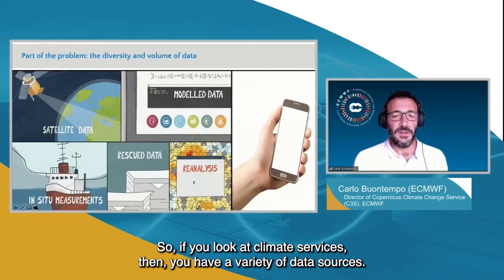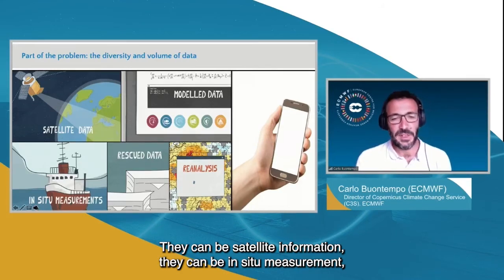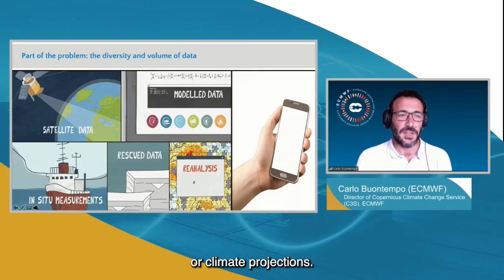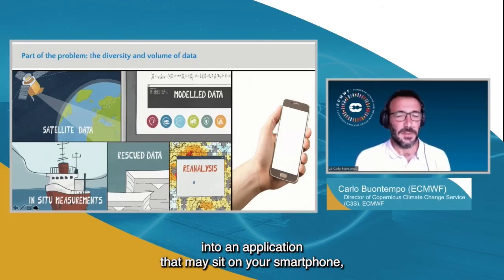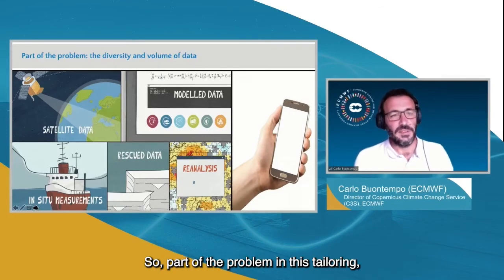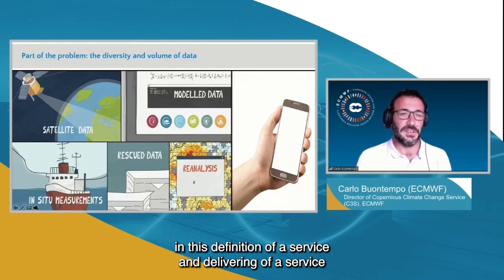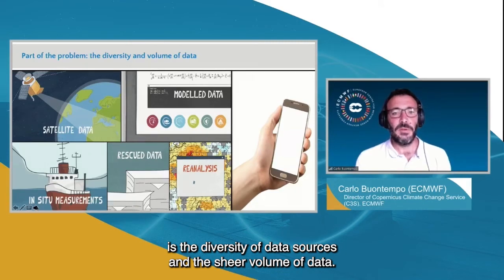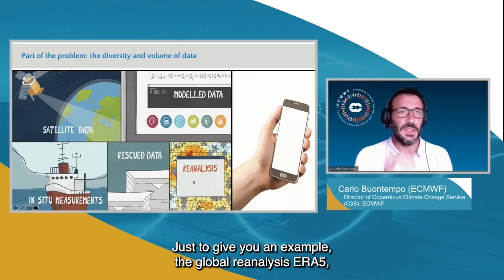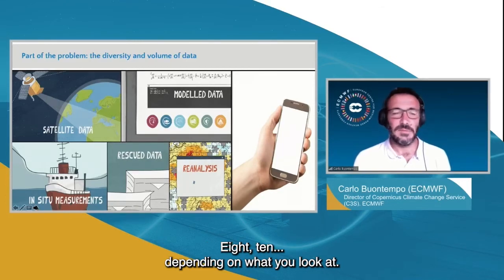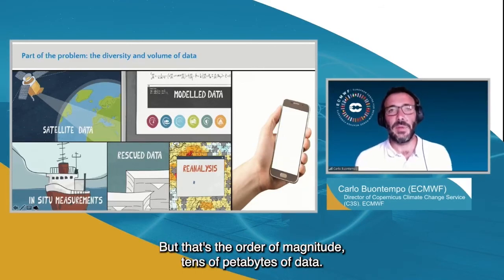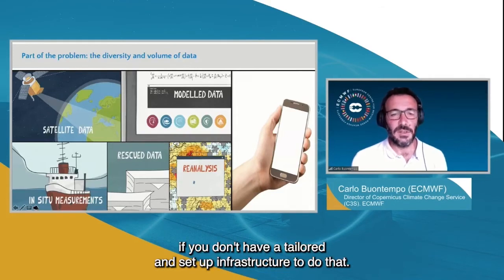If you look at climate services, you have a variety of data sources: satellite information, in-situ measurements, reanalysis, seasonal prediction, or climate projections. Before transforming all this data into an application that may sit on your smartphone, you need to process a huge amount of data. Part of the problem in tailoring and delivering a service is the diversity of data sources and the sheer volume of data. Just to give an example, the global reanalysis ERA5 dataset is on the order of tens of petabytes of data — something you cannot easily interrogate without dedicated infrastructure.